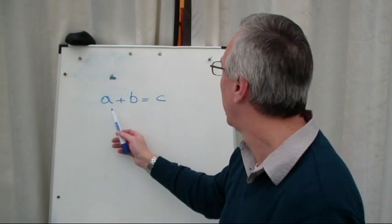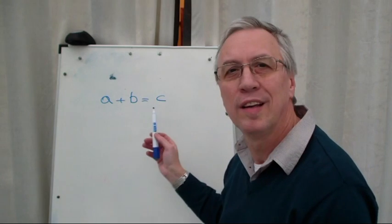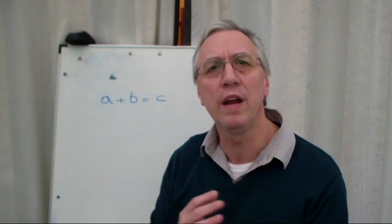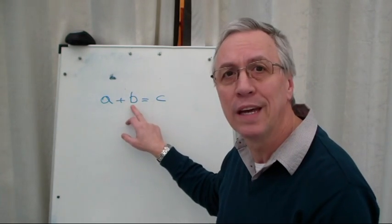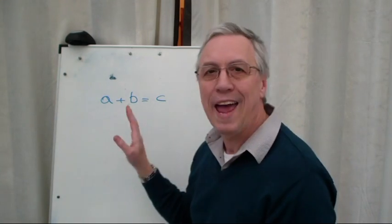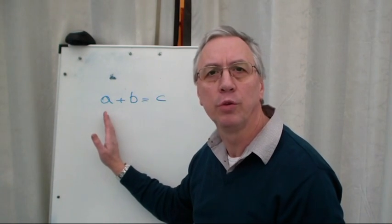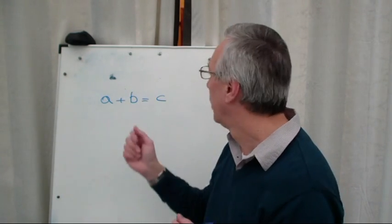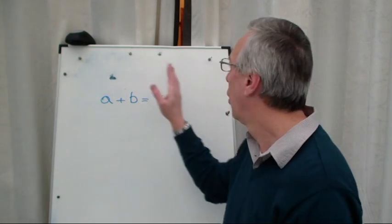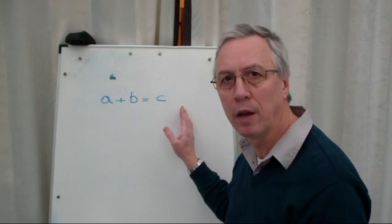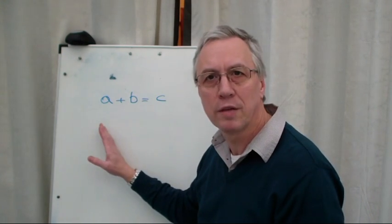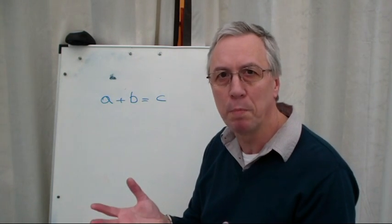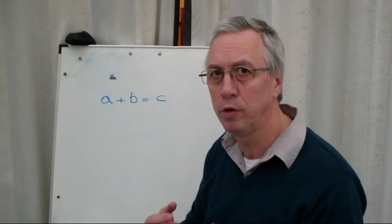So in this formula, A plus B equals C, C is the subject of the formula. And if we want to rearrange this formula to try and find B, then the rules are whatever we do to one side of the equals sign, we must do to the other side to keep the balance. So if we add something on this side, we have to add something on this side to keep the balance. If we subtract something on this side, then we subtract the same on that side to keep it balanced. It must always be balanced. We'll look at multiplication and division in a few moments.